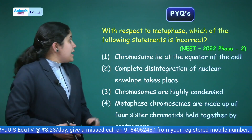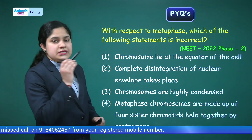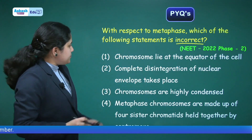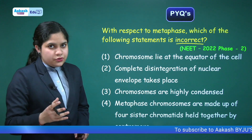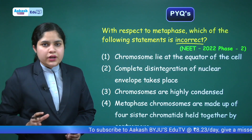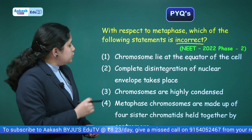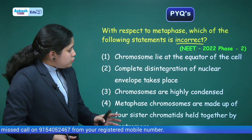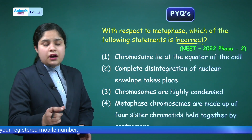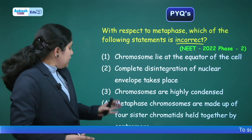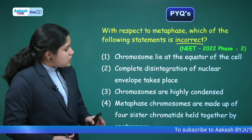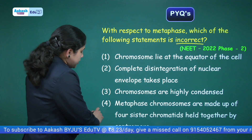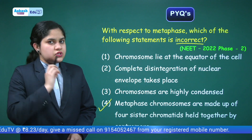Let's move to some previous year questions. The first question: with respect to metaphase, which of the following statements is incorrect? This question was asked in 2022. Option one: chromosomes lie at the equator — correct, we learned that. Option two: complete disintegration of the nuclear envelope takes place — this marks the beginning of metaphase. Option three: chromosomes are highly condensed — correct, we can measure chromosome size here. Option four: metaphase chromosomes are made up of four sister chromatids held together by the centromere — this is incorrect, because there are only two sister chromatids in a metaphase chromosome.